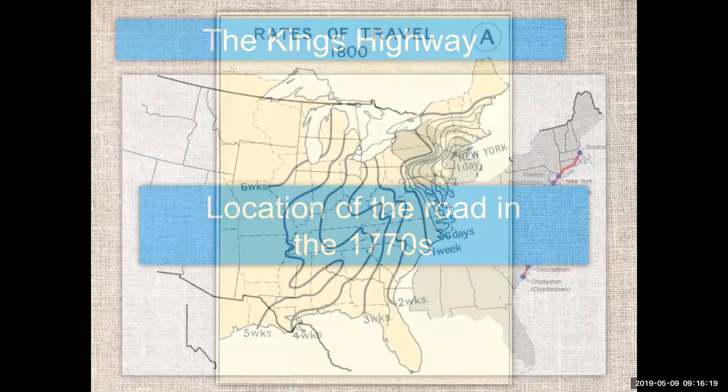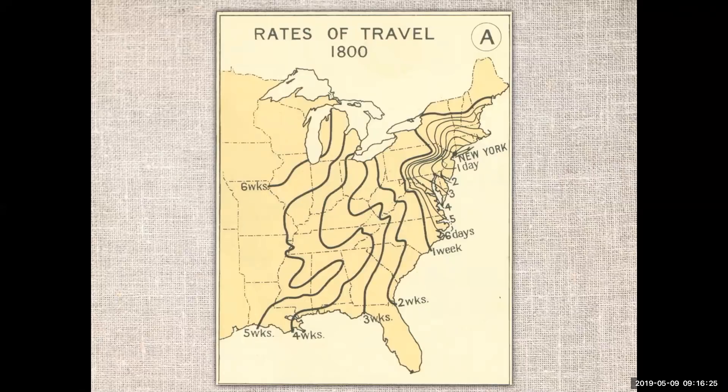Here's a map with approximate travel times in 1800. We've covered almost 200 years of history. If someone was traveling from New York down to North Carolina, the fastest possible time on horseback — riding as hard as you could every day — would be about a week.